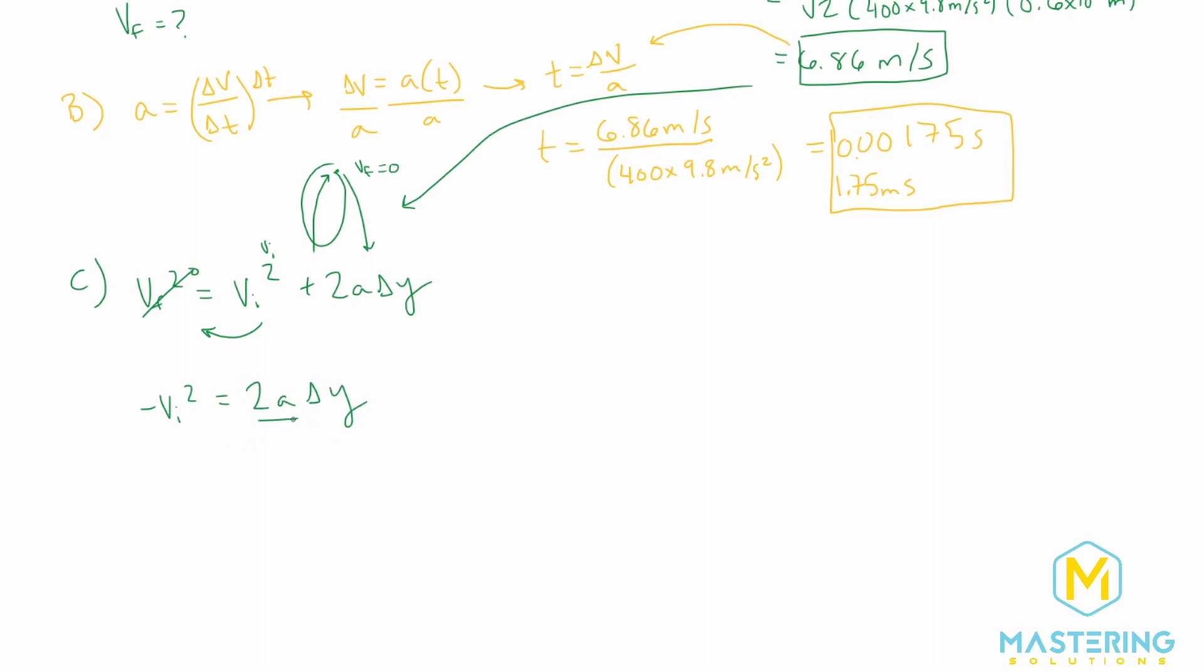And now we want to isolate delta Y. So let's divide both sides by 2A. And we'll be left with delta Y is equal to a negative velocity initial squared over 2 times the acceleration.